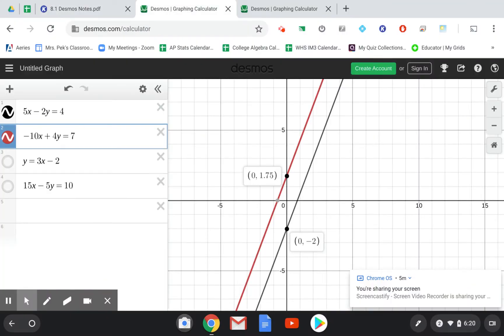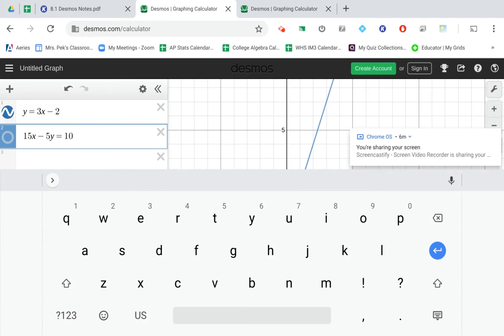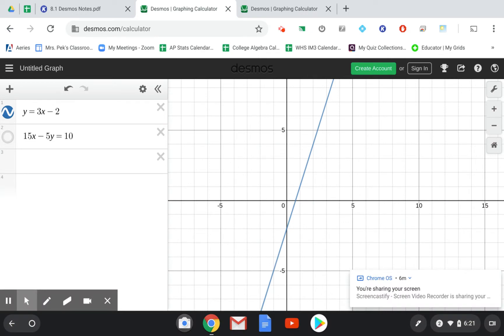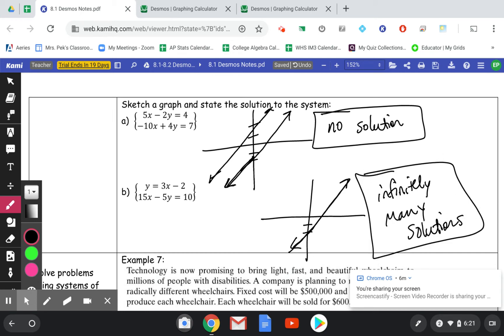The next example, y equals 3x minus 2 is that line there crossing my x and y axis at those points. And the next line is the same one. You can see they're the same line. And I'm just going to make sure it crosses at least one good point. -2 on my y axis. And the other line is the same. So infinitely many solutions. Because if they're the same line, they cross infinitely many times.